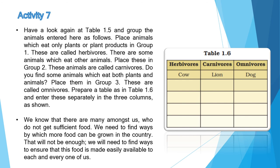Activity 7 में तीन columns बनाने हैं: herbivores, carnivores और omnivores। उनमें examples list करने हैं। जैसे cow herbivore का example है, lion carnivore का example है, और dog omnivore का example है। आपको इस table में और examples list करने हैं।